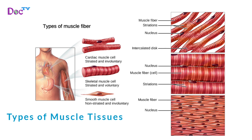Skeletal muscle is striated and responds to voluntary commands from the nervous system. Cardiac muscle is a special type of striated muscle found only in the myocardium of the heart, with branching fibers connected by intercalated discs that allow for synchronized involuntary contraction to maintain a constant heart rate. Smooth muscle is non-striated and contracts involuntarily in peristaltic waves that move substances through the body's digestive, respiratory, urinary, and reproductive tracts.